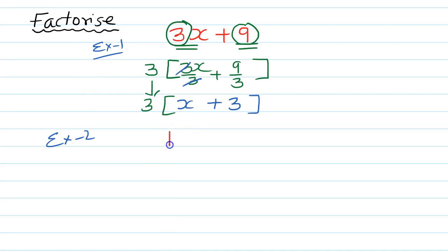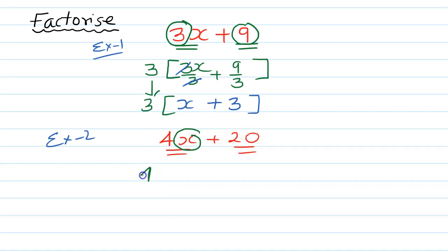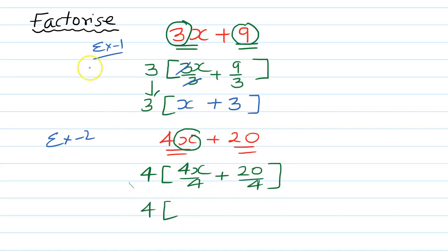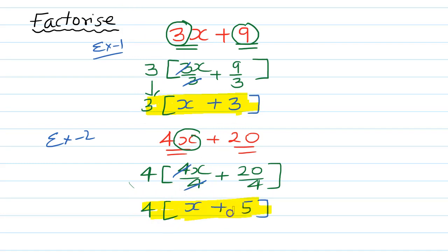Example 2: suppose 4x plus 20. There are two terms. x is only in the first term, so x is not common. We can take 4 out because 20 appears in the 4 times table. So 4x divided by 4 gives x, and 20 divided by 4 gives 5. The 4s cancel, so the answer is 4(x plus 5).